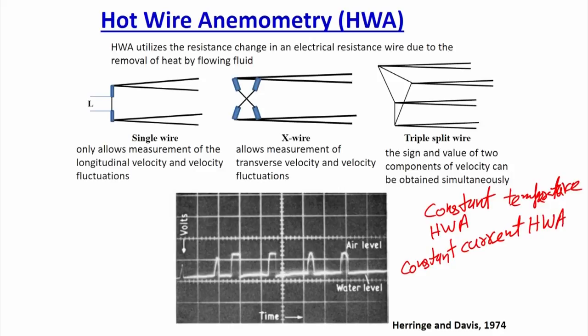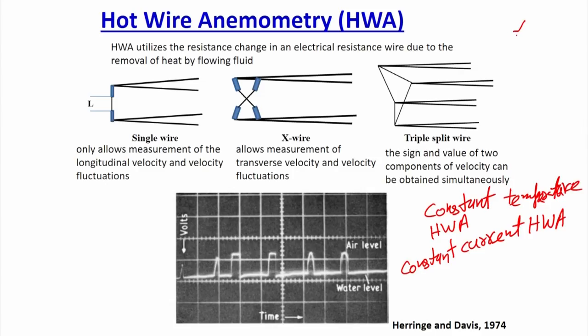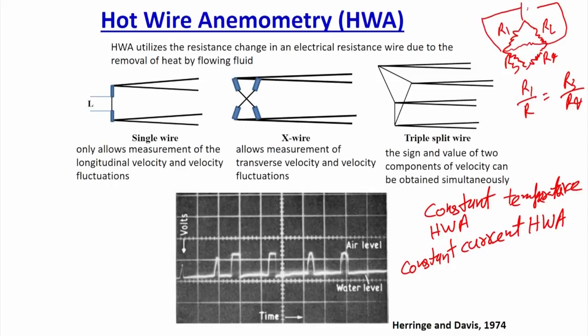In the hot wire anemometer, a wire is inserted into the flow and is part of a Wheatstone bridge circuit with resistances R1, R2, R3, R4 where R1/R2 = R3/R4. A reference current is passed through the circuit. If any resistance changes, the current changes and that change is recorded as a change in voltage. In the HWA, one of the resistances is extended into the flow as a small wire. Current passing through this wire heats it via I²R power.